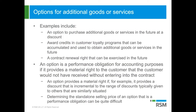The last area in step two covers options for additional goods or services. Determining whether an option for additional goods or services is a performance obligation is going to require a lot of judgment. If one of these options is accounted for as a performance obligation, you'll allocate some of the transaction price to it and recognize that allocated amount as revenue in the future, separately from the transaction price allocated to other promised goods or services. Examples include an option to purchase additional goods or services at a discount, or award credits in customer loyalty programs like frequent flyer plans.